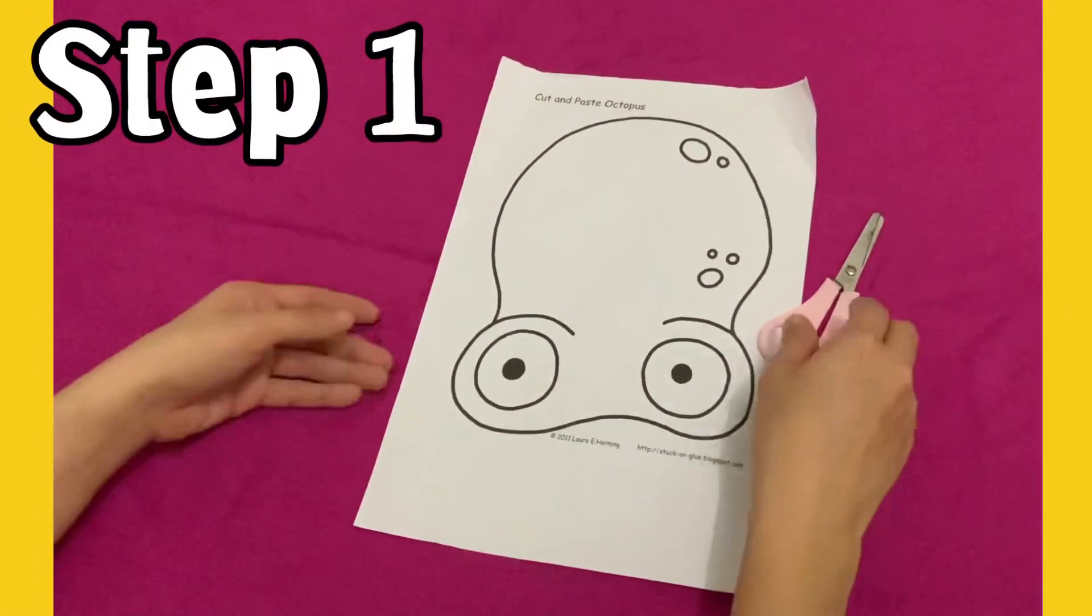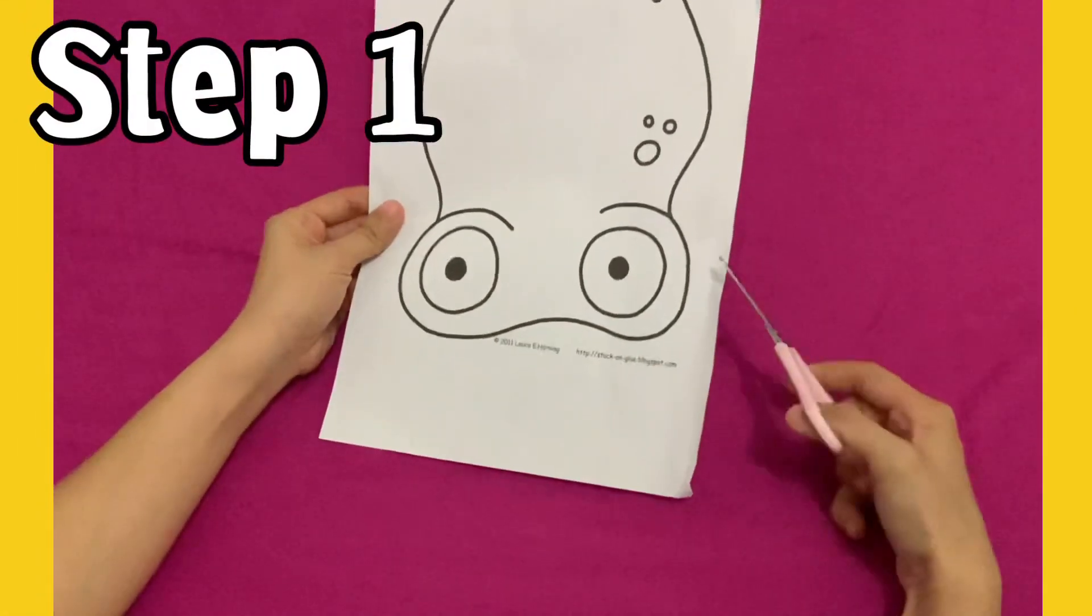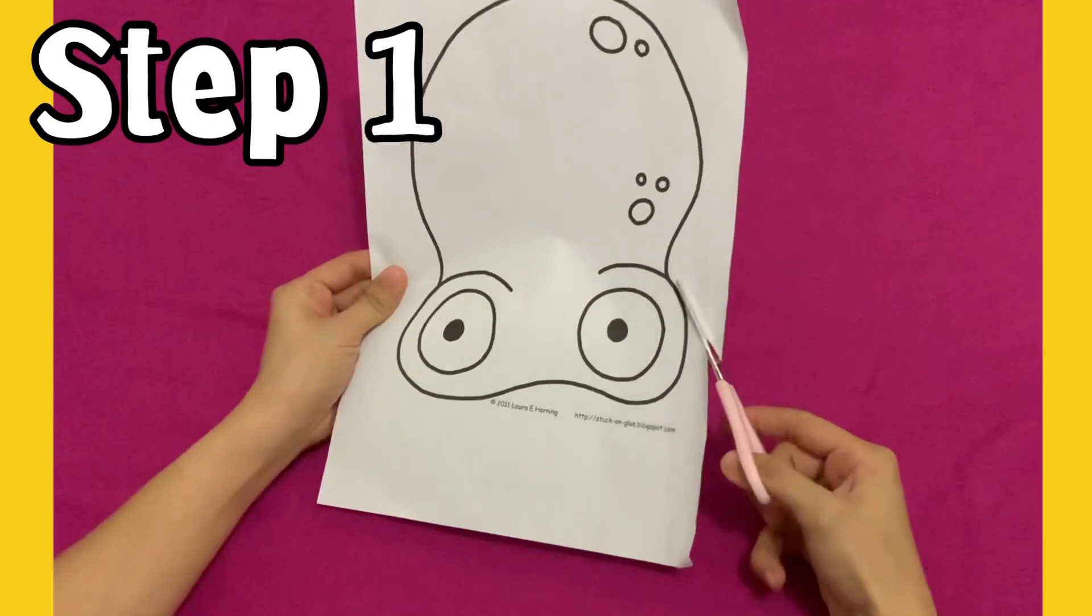For step number one, we are going to cut the pattern that shows the head of an octopus. Snip, snip, snip!